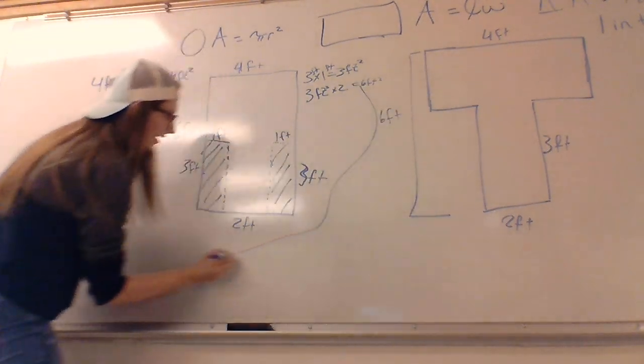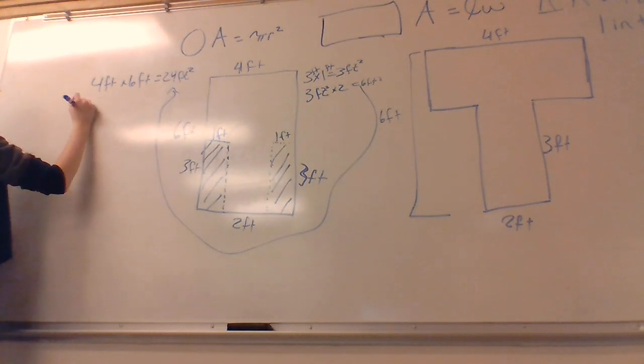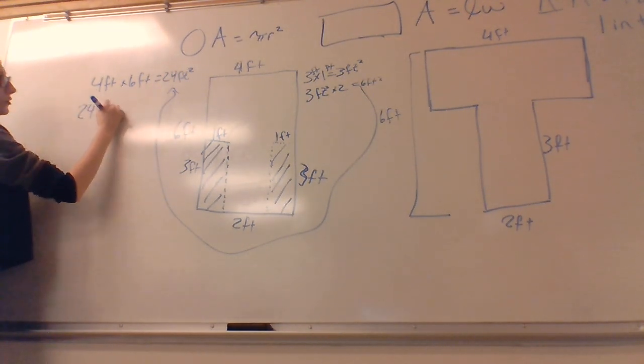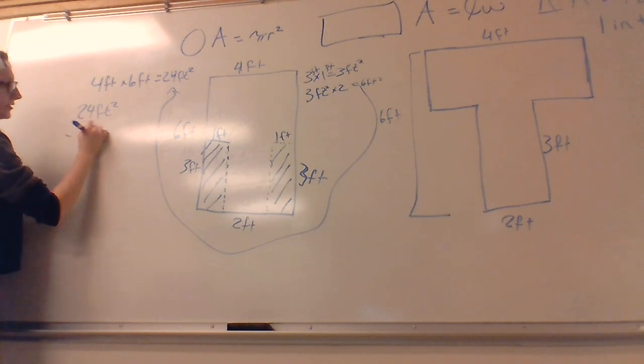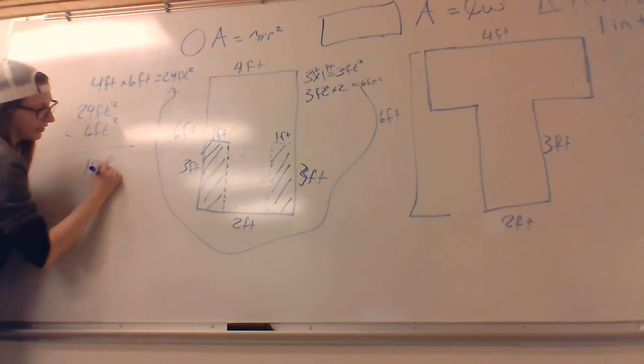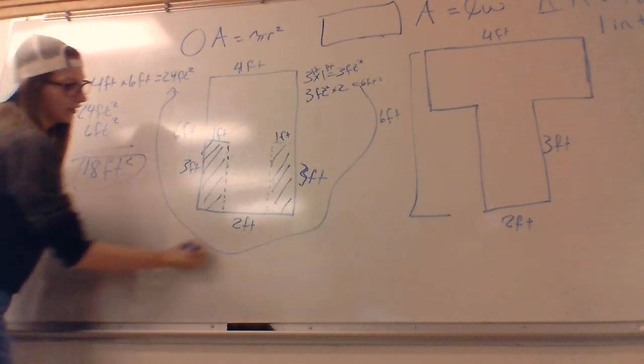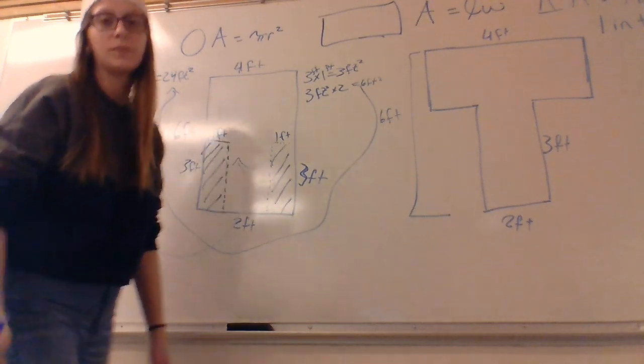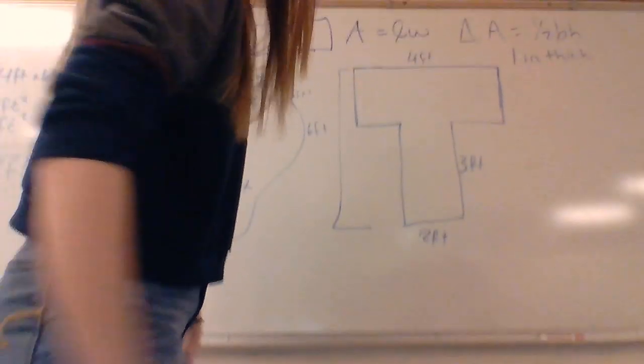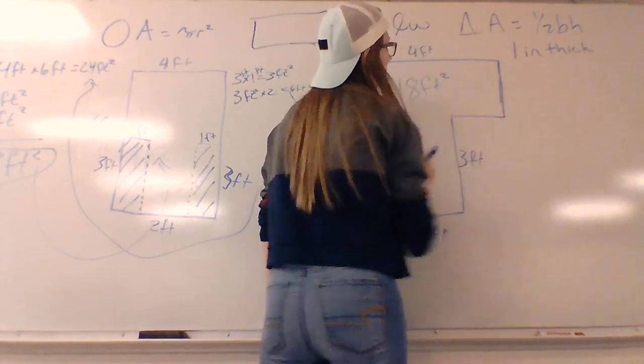This six feet is going to come over here and be subtracted by 24. We're going to do 24 feet squared minus six feet squared equals 18 feet squared. This is the total area of the T shape. We're going to come back over here and put a big old 18 feet squared in here so we remember.